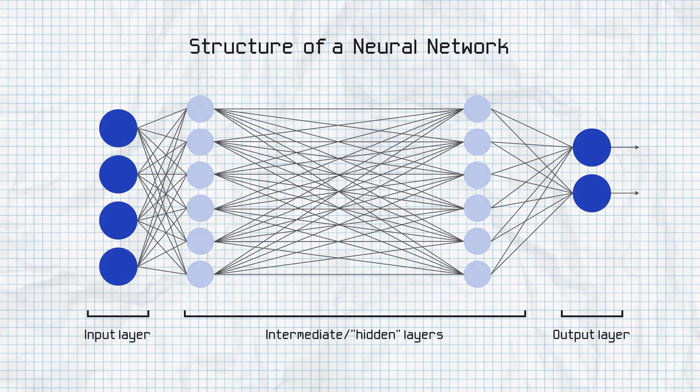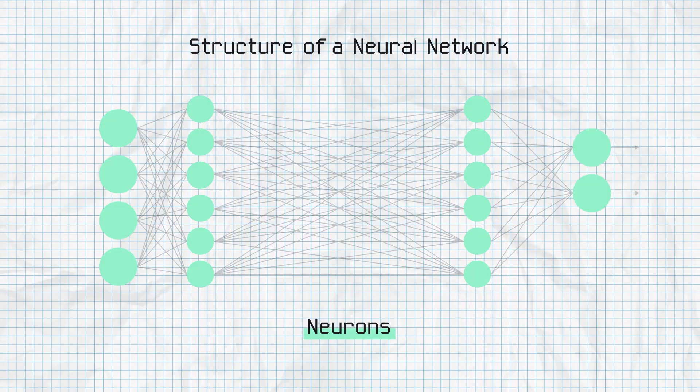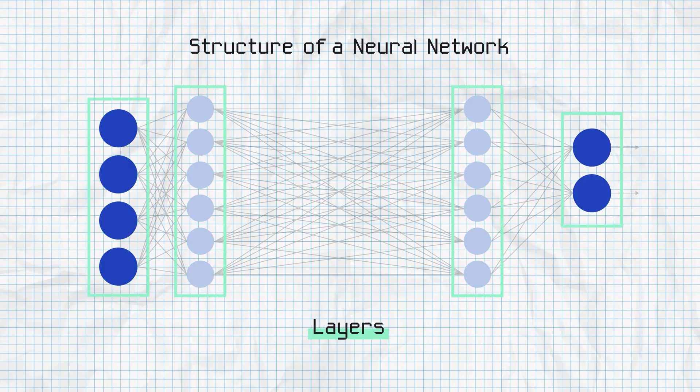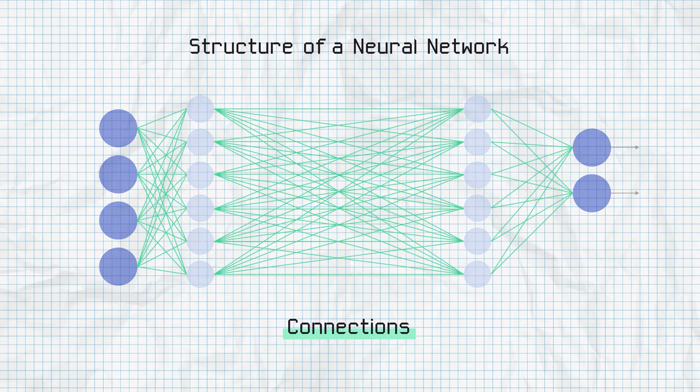This is what a basic neural network looks like. It's made up of neurons, which are inspired by the neurons in our brain. For now, think of each neuron as a number. These neurons make up layers, and the connections between layers are basically just calculations that determine what numbers the next neurons will hold. You're probably wondering how a structure like this can actually help our computer recognize our handwritten six.